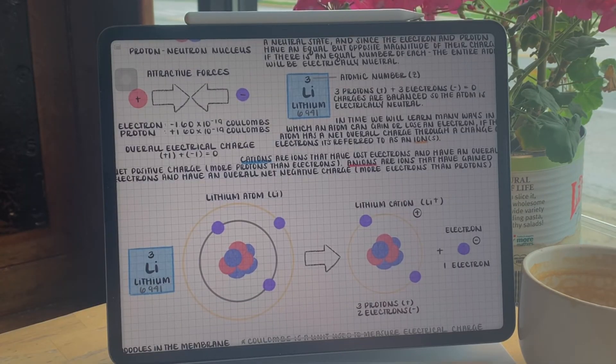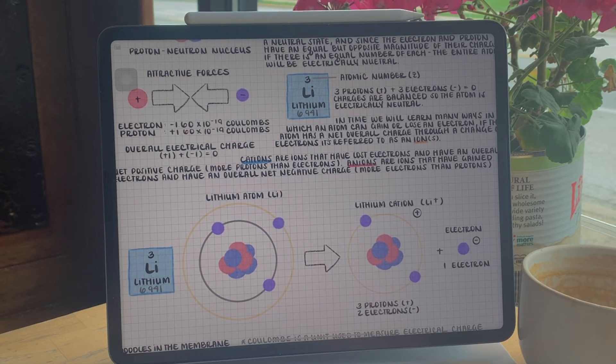For example, taking account lithium. As it's listed on the periodic table, it has three protons and three electrons for an overall electrical charge of zero. The charges are balanced, so the atom is electrically neutral.